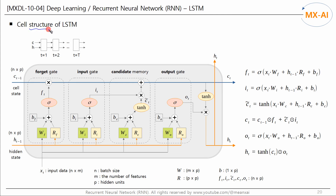Now let's look at the structure of LSTM. In a traditional RNN, this process is repeated while passing the hidden state H to the next time step. In LSTM, a cell state C is added here, and this is also passed to the next time step along with H. The figure below details the internal structure of one time step.